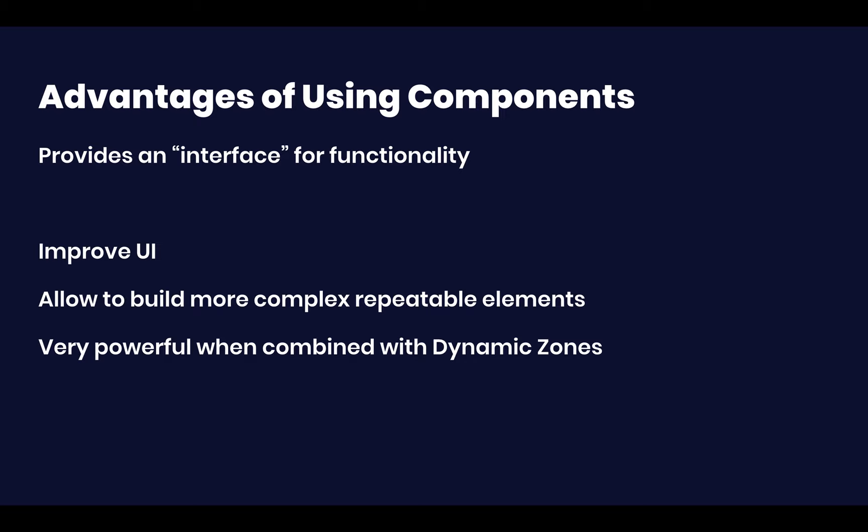Components are just a way to specify JSON data or advanced Strapi data, and the beauty of it is that it provides an interface for functionality. You could create a bunch of products — products with variations, products on discount, or with free shipping — but they'll all be products. You can think of having a component side for the product that lets you write a single math library that calculates all of those costs. They also give a UI improvement and become extremely powerful when combined with dynamic zones.